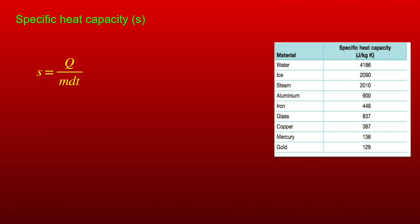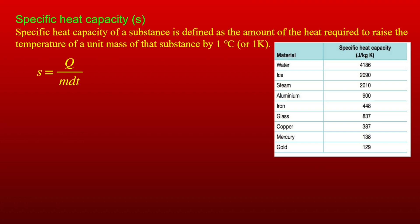First, specific heat capacity. The specific heat capacity of a substance is defined as the amount of heat required to raise the temperature of a unit mass of that substance by 1 degree Celsius. For example, 1 kg of water, 1 kg of ice, 1 kg of aluminum, or 1 kg of iron — a temperature change of 1 degree Celsius.